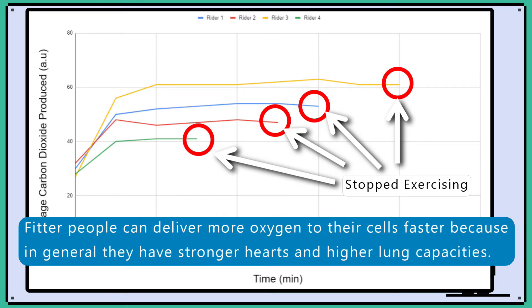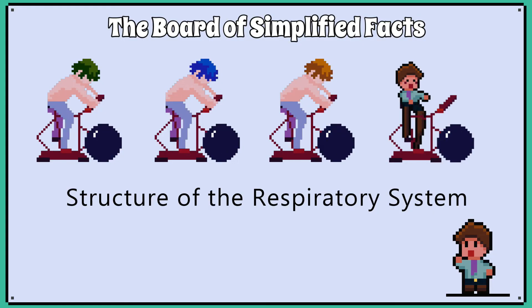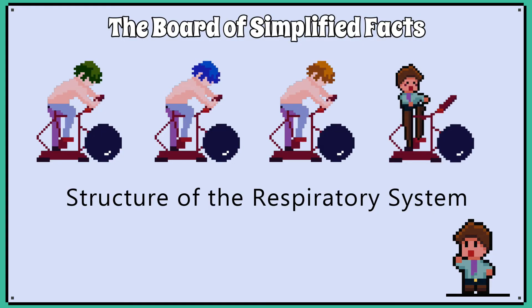Remember, they are all expending the same amount of energy at 350 watts. The trick is to look at how they are getting that 350 watts of energy. In the next lesson, we are definitely looking at the structure of the respiratory system.